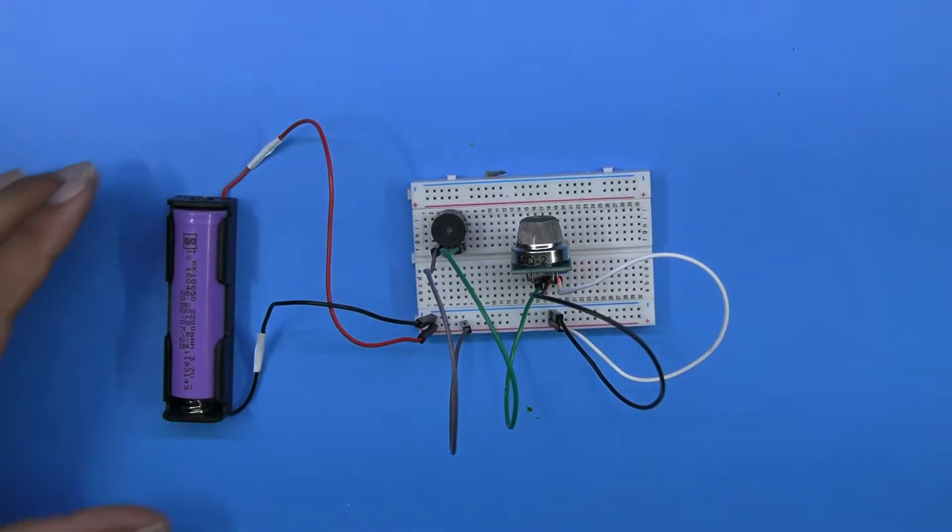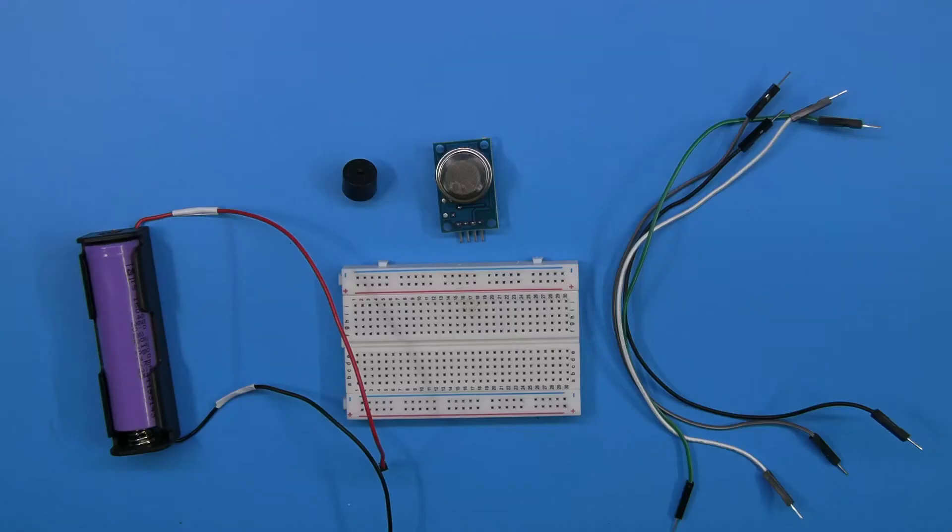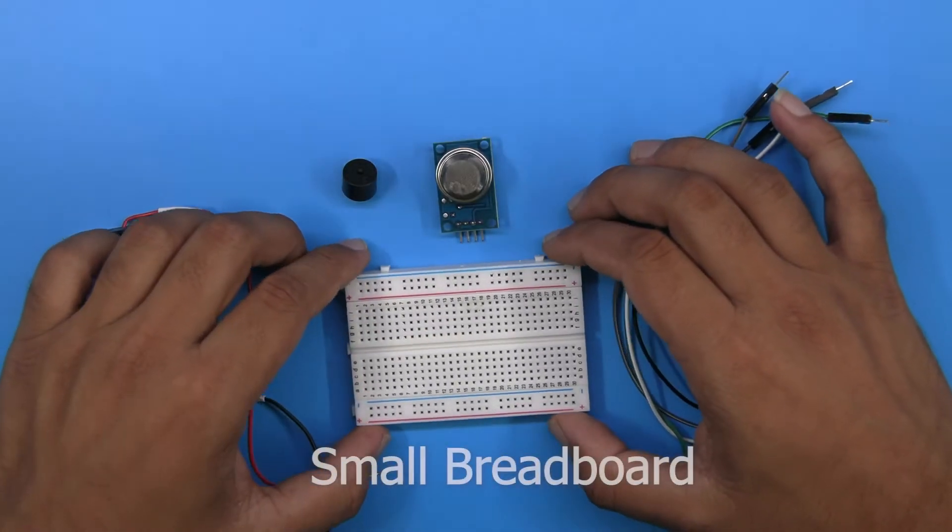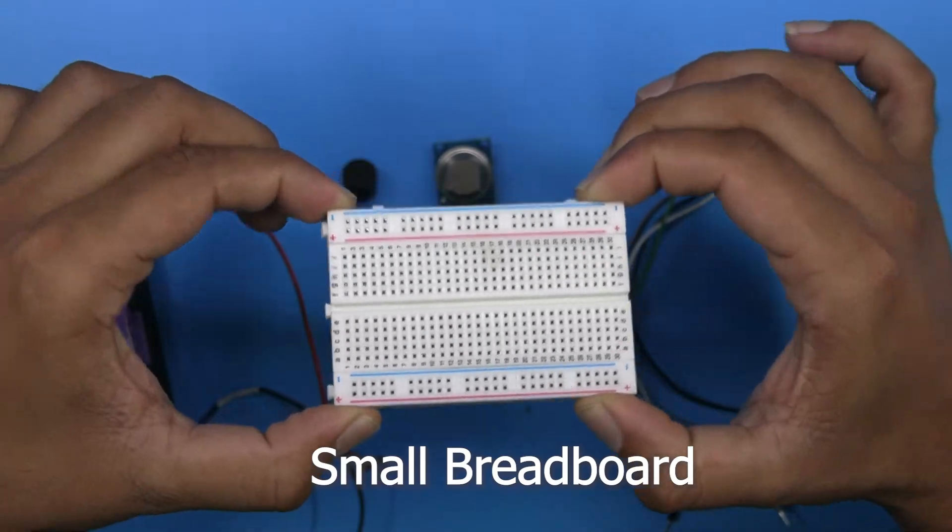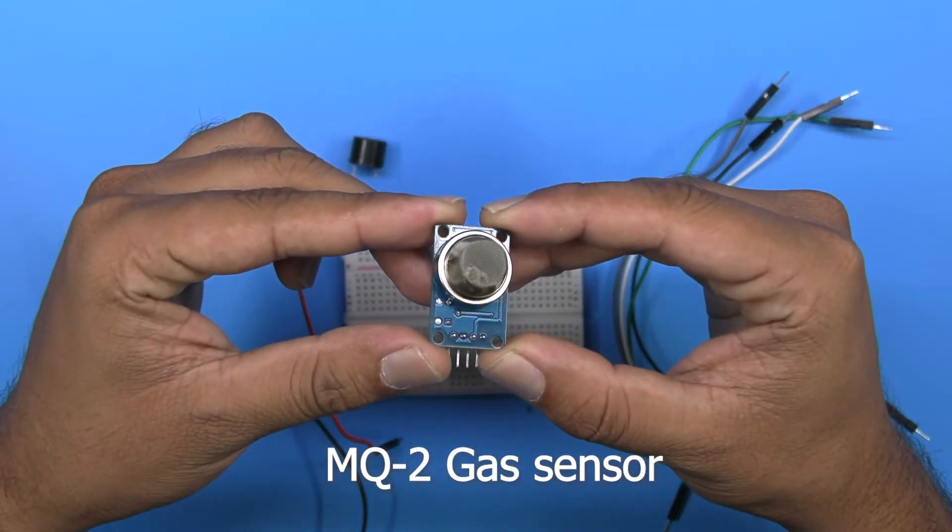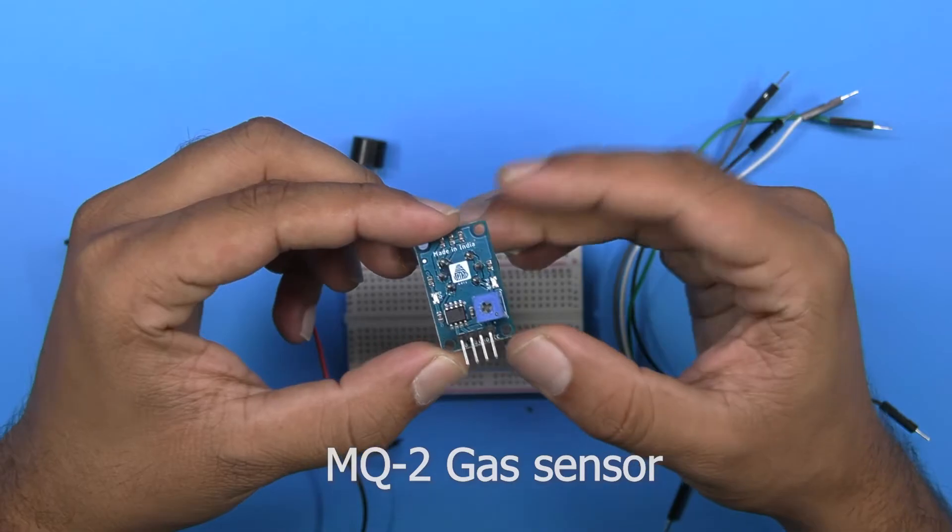For building this circuit we need some components like one small breadboard for building our temporary circuit. Next we have MQ2 sensor which is the main part of our circuit.